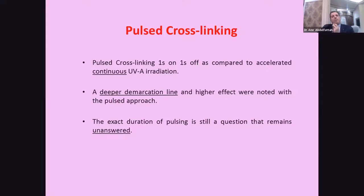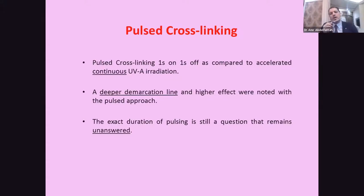Another protocol is called pulsed cross-linking. In pulsed cross-linking, we use one second on and one second off, as compared to accelerated continuous ultraviolet irradiation. This technique achieves a deeper demarcation line, but the exact duration of the pulse remains unanswered — we still do not know the optimal on/off duration, whether one second or two seconds, and this issue is still under debate.